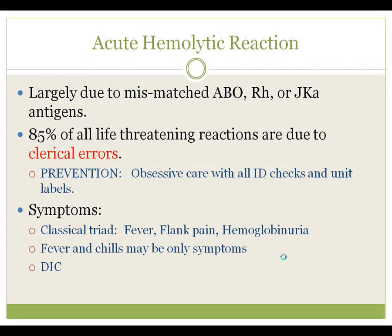Our first topic is the acute hemolytic transfusion reaction. This is a very serious, potentially life-threatening complication of transfusion, fortunately easily prevented by good clerical management. Approximately 80-85% of all life-threatening acute hemolytic transfusion reactions are due to simple clerical error, and thus these can be largely prevented by being very careful and diligent about your patient's ID banding, the unit ID, and the orders — making sure that all these things match properly before giving the unit.